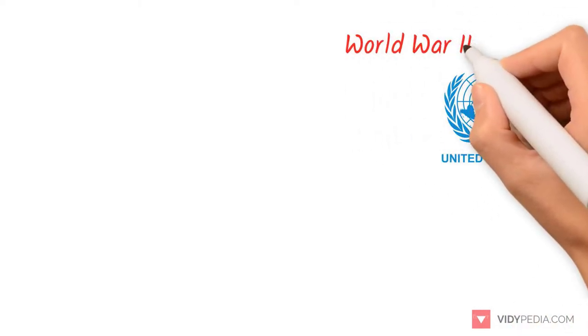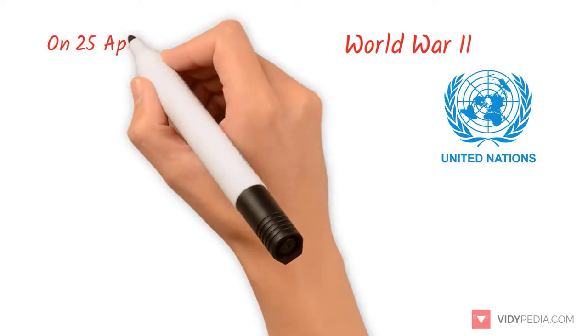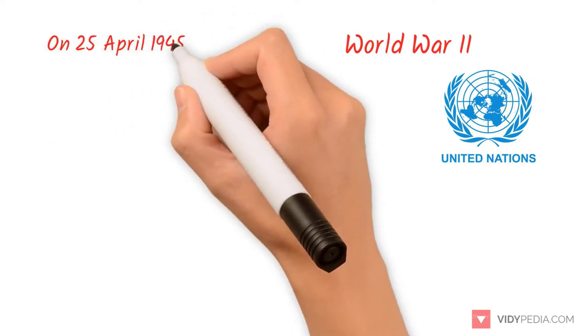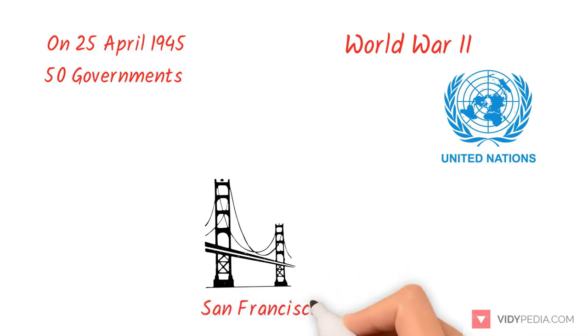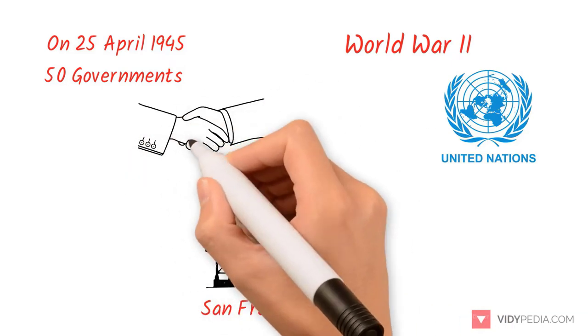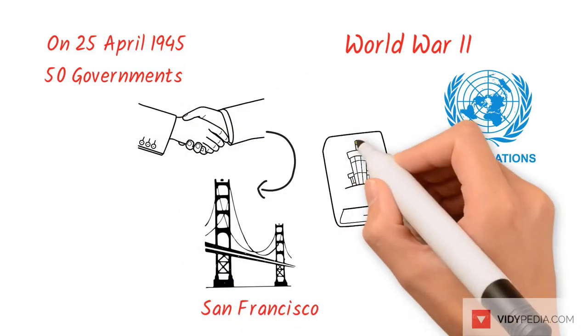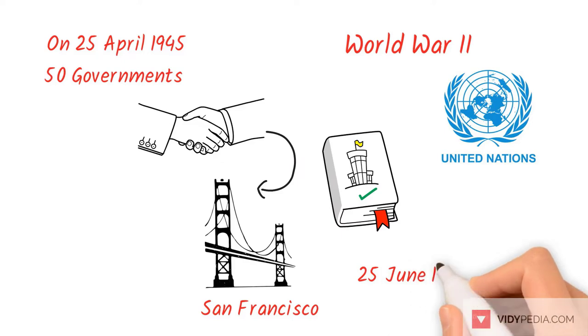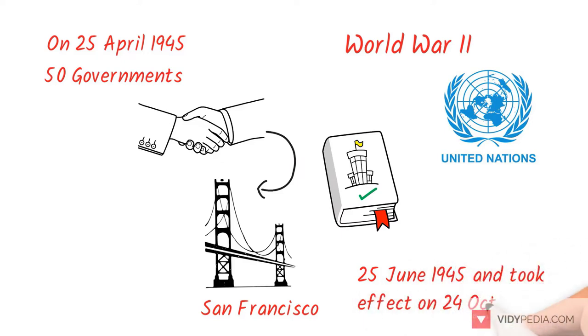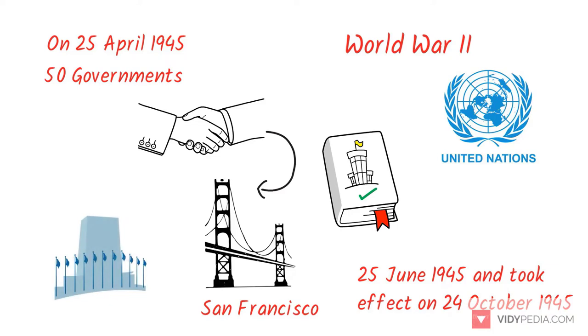The UN was established after World War II with the aim of preventing future wars, succeeding the rather ineffective League of Nations. On April 25, 1945, 50 governments met in San Francisco for a conference and started drafting the UN Charter, which was adopted on June 25, 1945 and took effect on October 24, 1945, when the UN began operations.